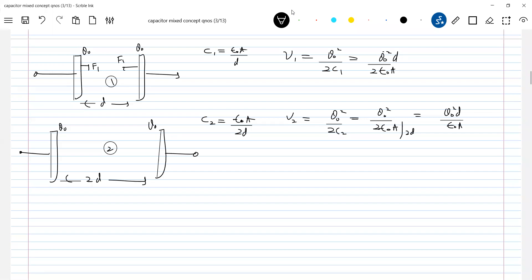This is something very important. So what you're noticing? U2 greater than U1. From where this energy for capacitor has come?